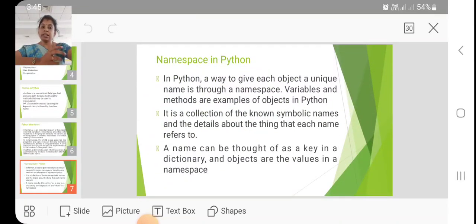Namespace in Python. In Python, a way to give each object a unique name is through a namespace. Variables and methods are examples of objects in Python. It is a collection of known symbolic names and the details about the thing that each name refers to. A name can be thought of as a key in the dictionary and objects are the values in the namespace.